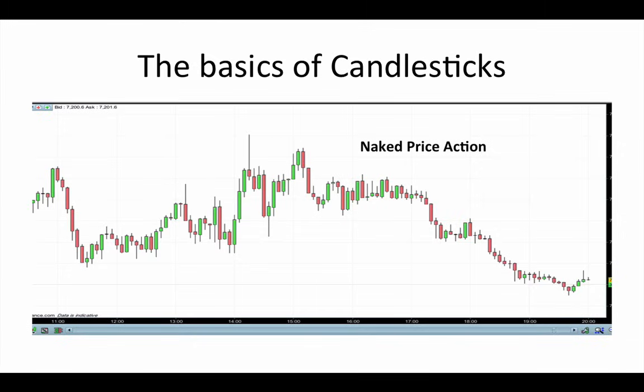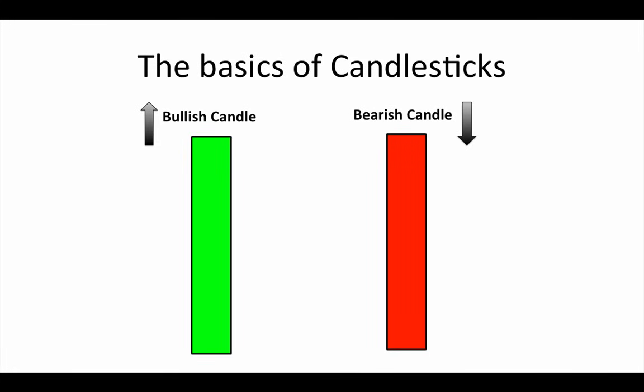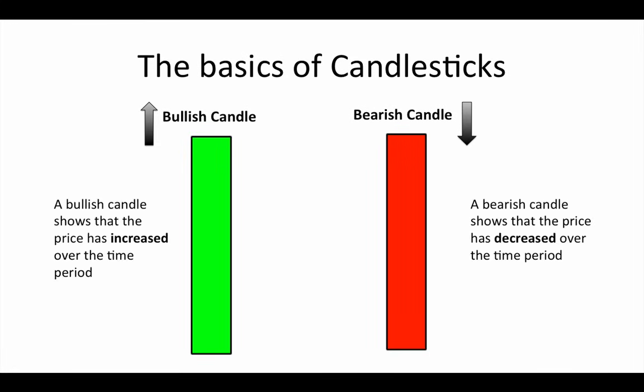As you can see, the chart is made up of lots of individual candlesticks. Candles tend to be either bullish or bearish. On the left here we have a green candle which represents a bullish candle — bullish simply means that the price increased over the time period. On the right, the red candle is bearish, which simply means the price decreased over the period. Each fully formed candle represents the price action over a specific time period. So if you're looking at a five-minute chart, each candle represents five minutes of price action. An hourly chart means each candle represents an hour's worth of price action, a daily chart each candle represents a day, and so on.